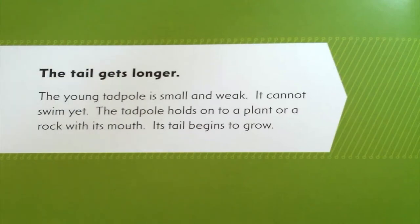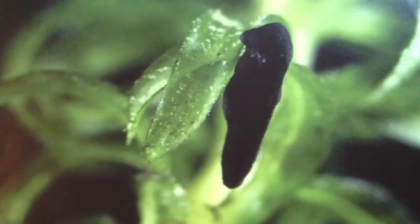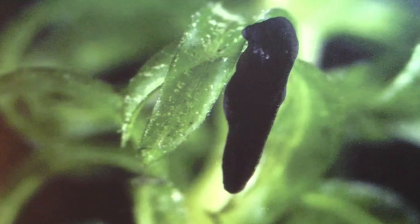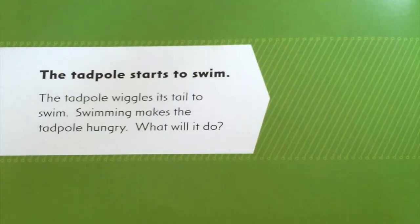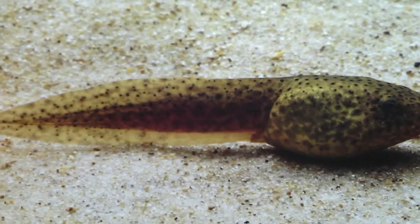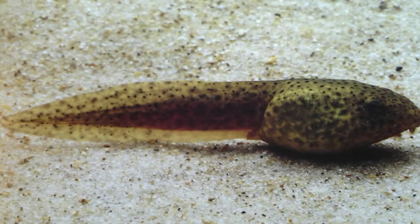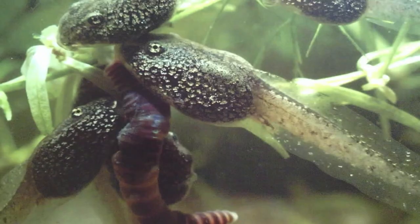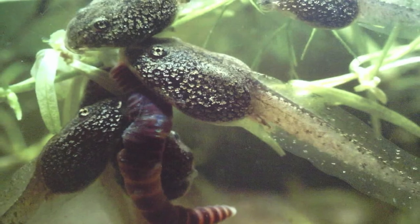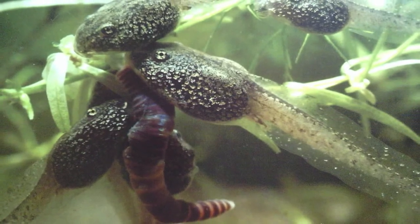Here's our next heading: the tail gets longer. The young tadpole is small and weak. It cannot swim yet. The tadpole holds onto a plant or a rock with its mouth. Its tail begins to grow. Here's our next heading: the tadpole starts to swim. The tadpole wiggles its tail to swim. Swimming makes the tadpole hungry. Here's our next heading: the tadpole starts to eat. The tadpole eats tiny plants that grow underwater. Some tadpoles also eat frog eggs. Some tadpoles even eat other tadpoles. Eating makes the tadpole grow.